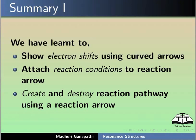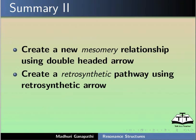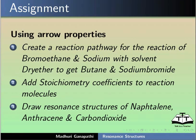Let us summarize what we have learnt. In this tutorial, we have learnt to: show electron shifts using curved arrows, attach reaction conditions to a reaction arrow, create and destroy a reaction pathway using a reaction arrow. As an assignment using arrow properties, create a reaction pathway for the reaction of bromoethane and sodium with solvent dry ether to get butane and sodium bromide.